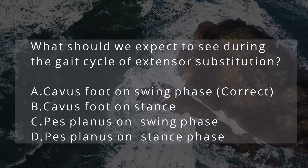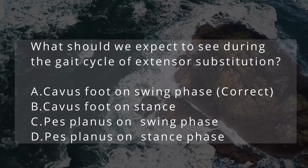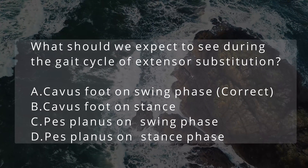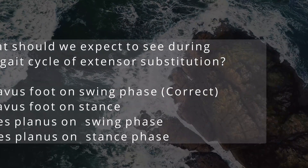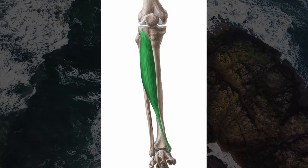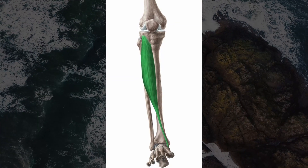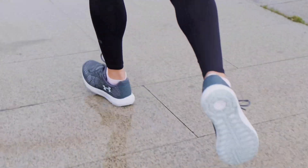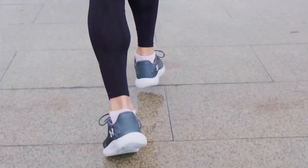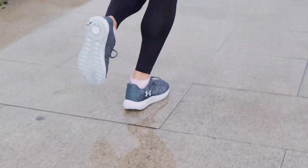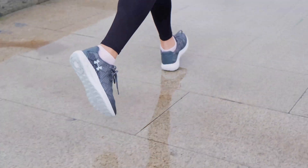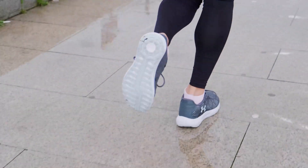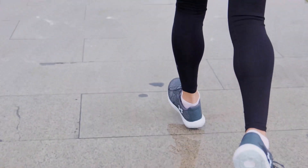The answer is cavus foot on the swing phase of gait. Remember that during the swing phase of gait, the tibialis anterior tendon must fire in order to clear the ground. If it is unable to fire, the extensor digitorum longus and extensor hallucis longus have to fire earlier and longer, which can lead to extensor substitution hammer toe deformity.